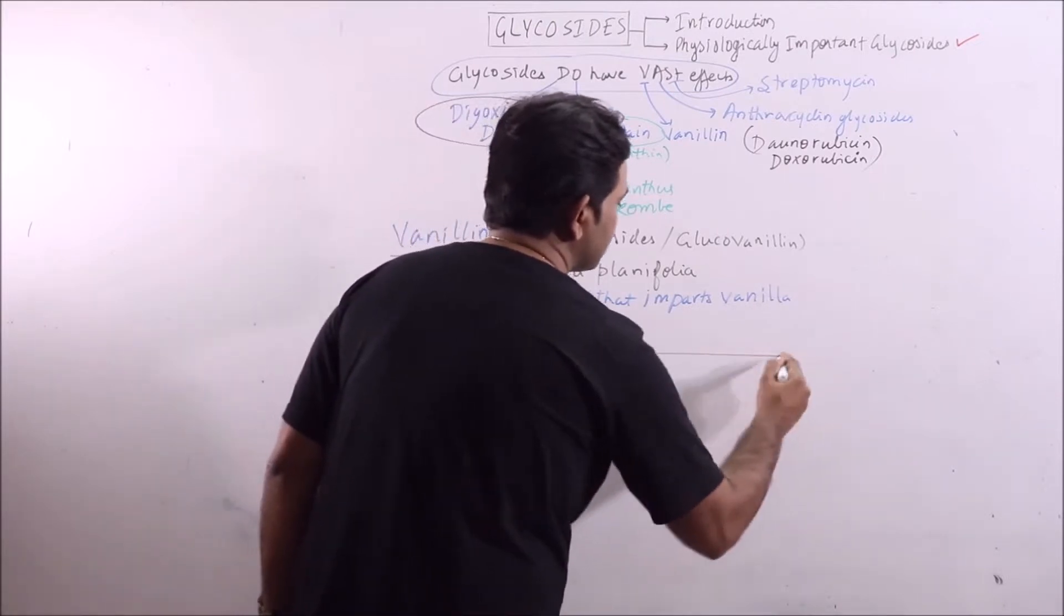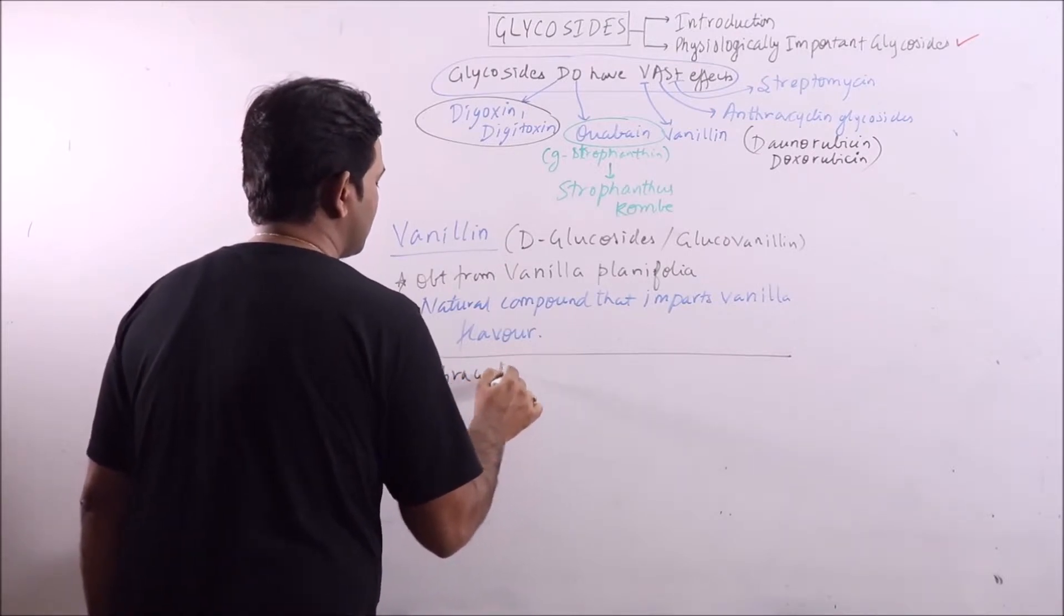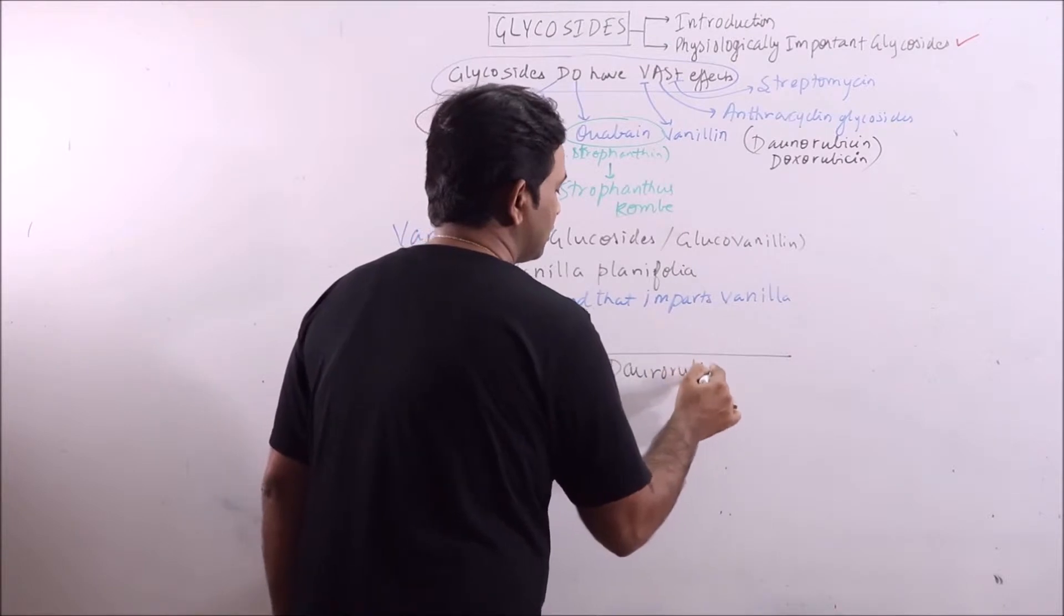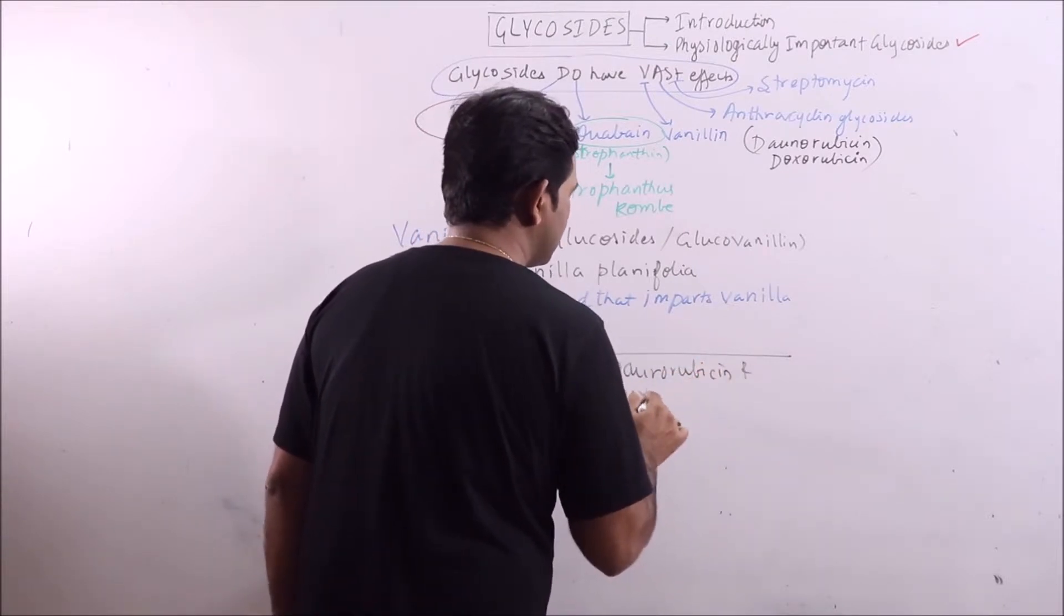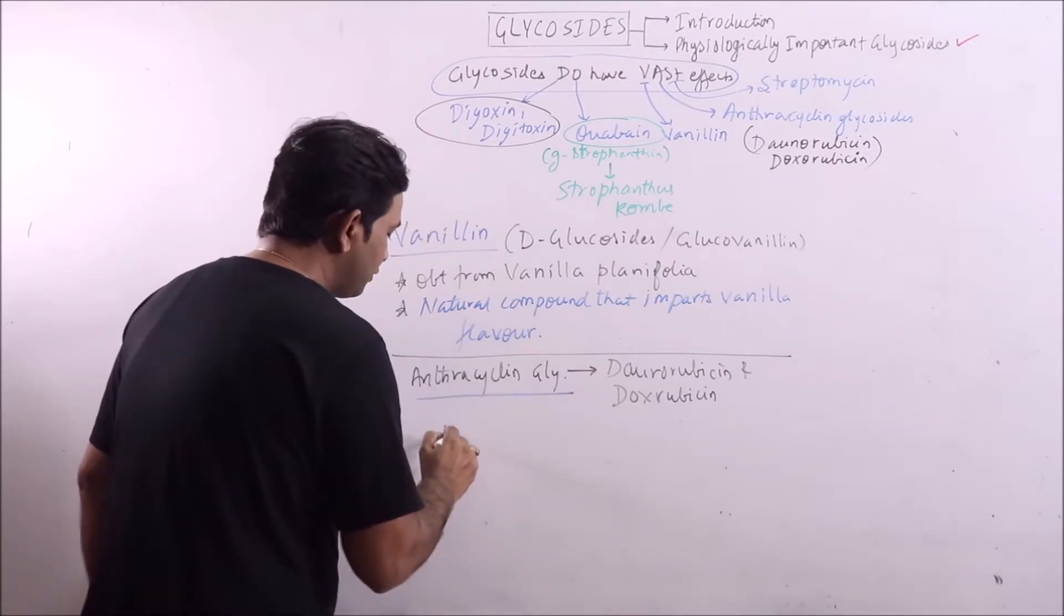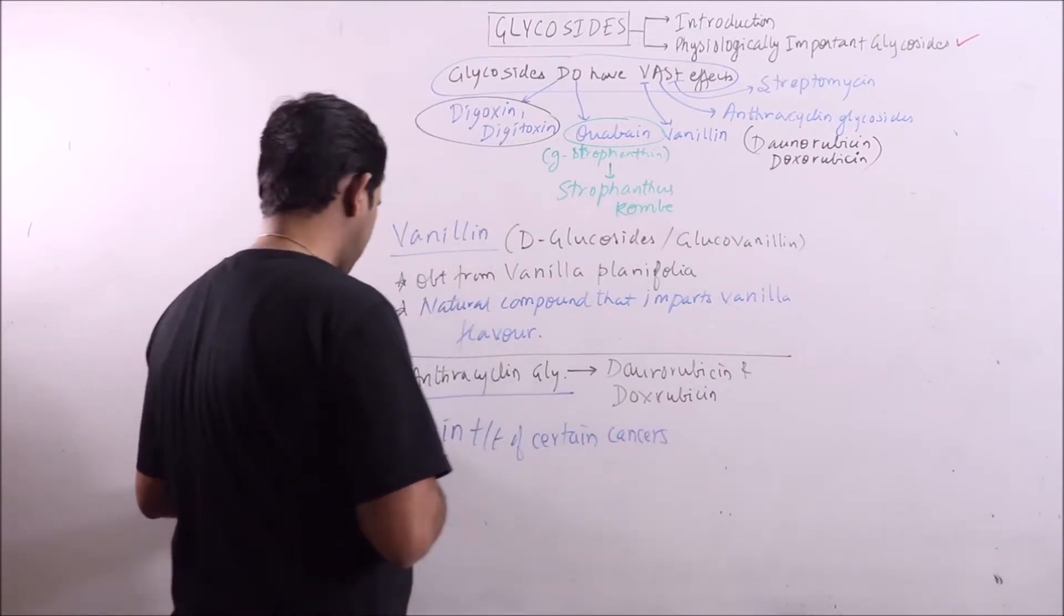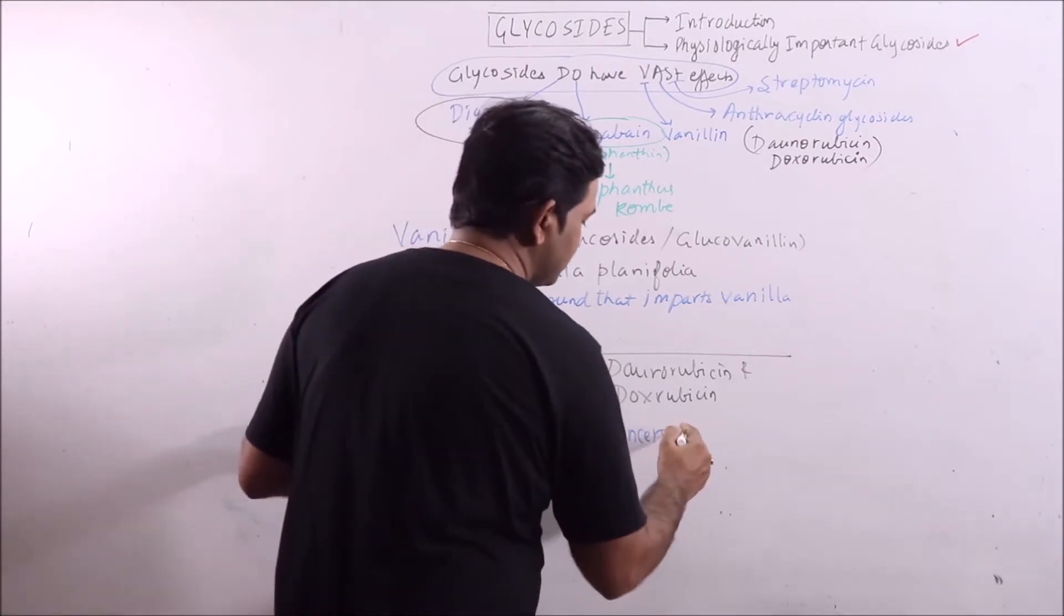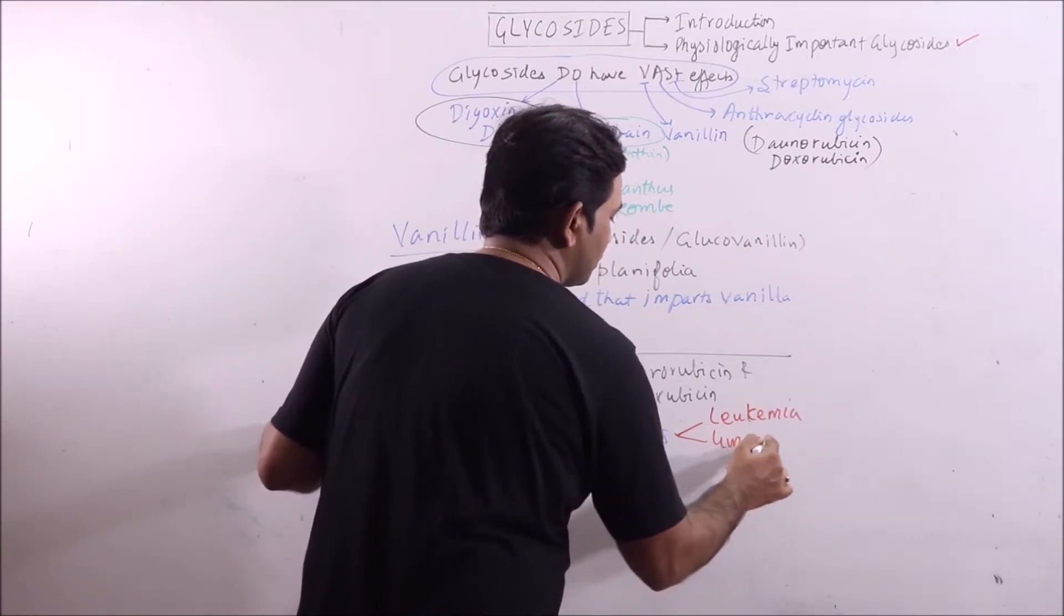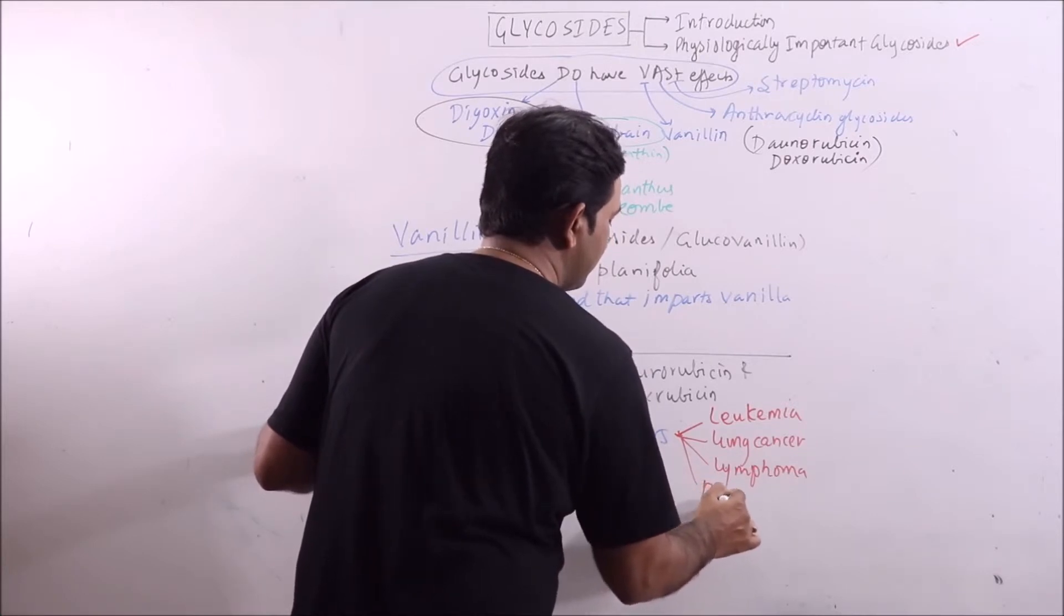Next one is anthracycline glycosides like daunorubicin and doxorubicin. These are basically used in treatment of certain cancers like leukemia, lung cancer, lymphoma and breast cancer.